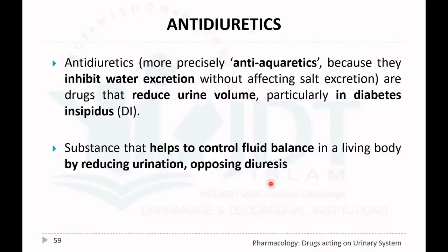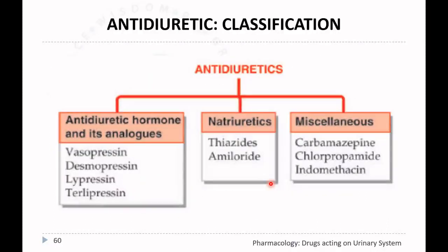Coming to the classification, anti-diuretics are mainly classified into: first, anti-diuretic hormone and its analogues like vasopressin, desmopressin, lepressin, and terlipressin. Second, natriuretics, which are agents that increase the excretion of sodium alone without enhancing water excretion, such as thiazide diuretics and amiloride.